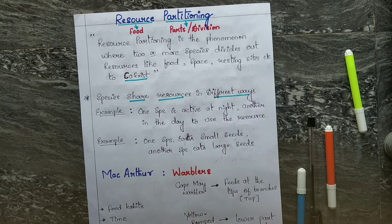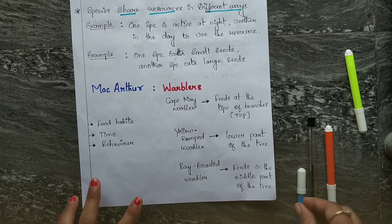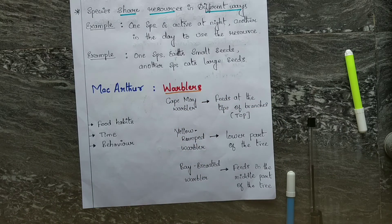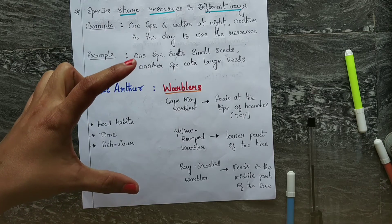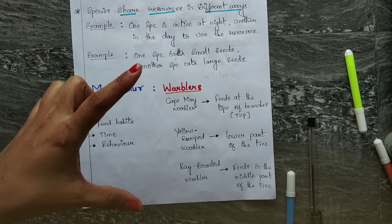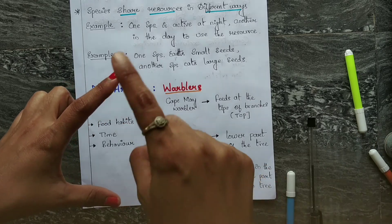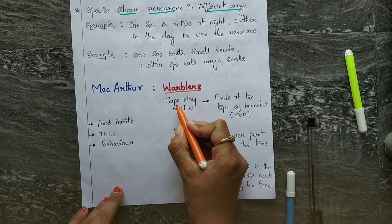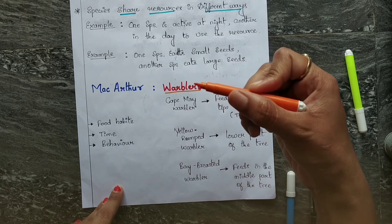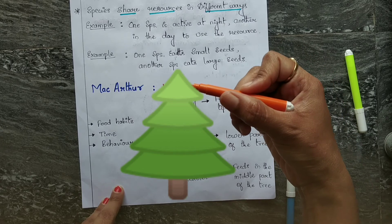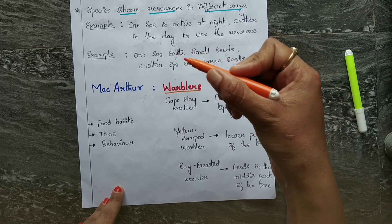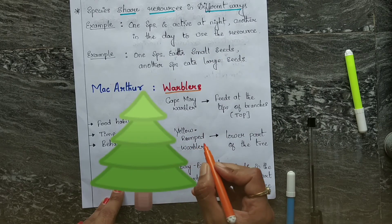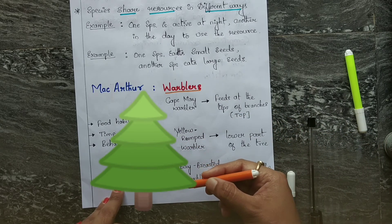The scientist Robert MacArthur observed in nature warblers - different kinds of warblers feeding on the same tree but at different areas of the tree. The Cape May warbler feeds on the top or tips of the branches of the tree. And another warbler, the Yellow-Rumped Warbler, feeds on the lower part of the tree.